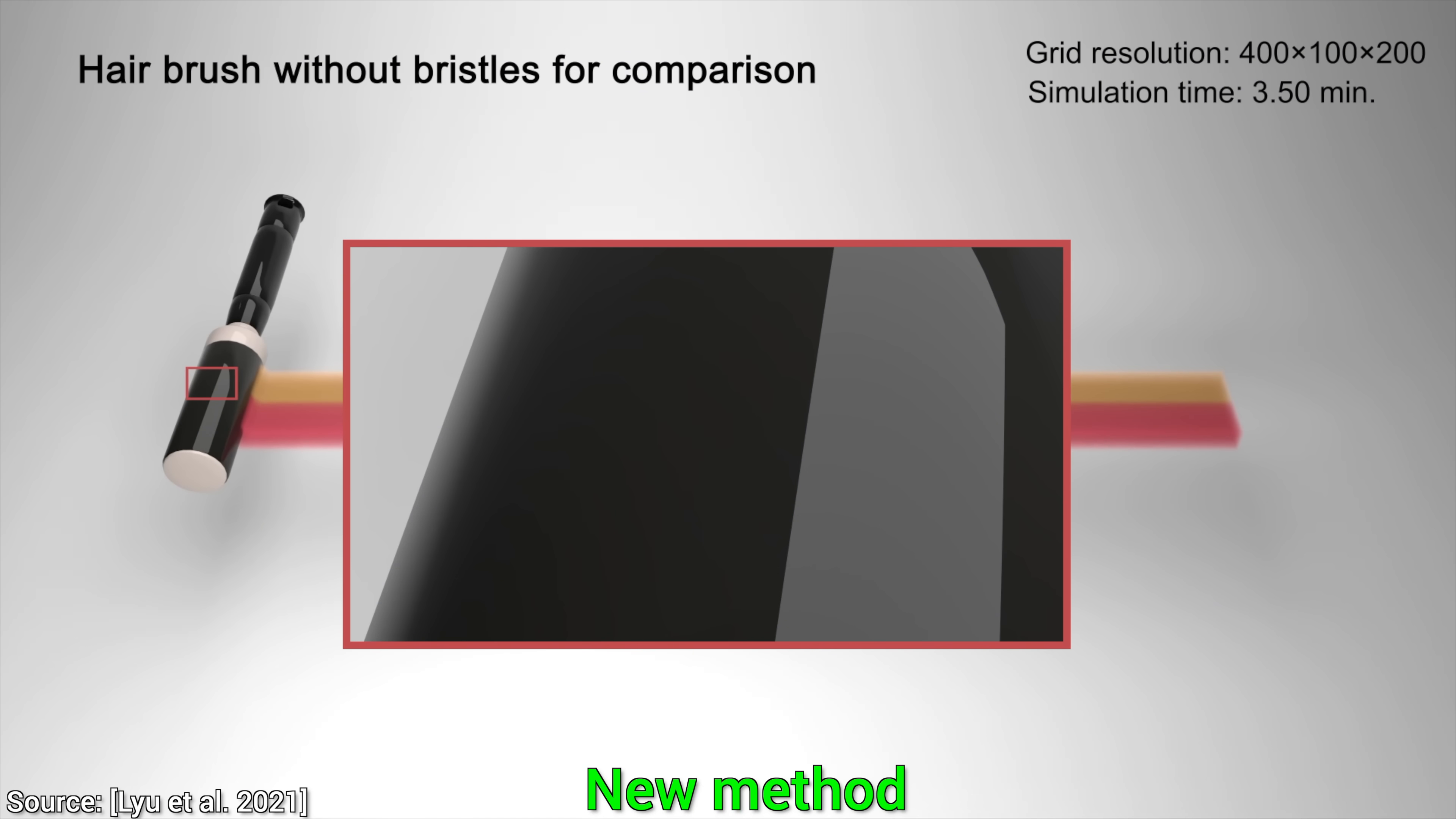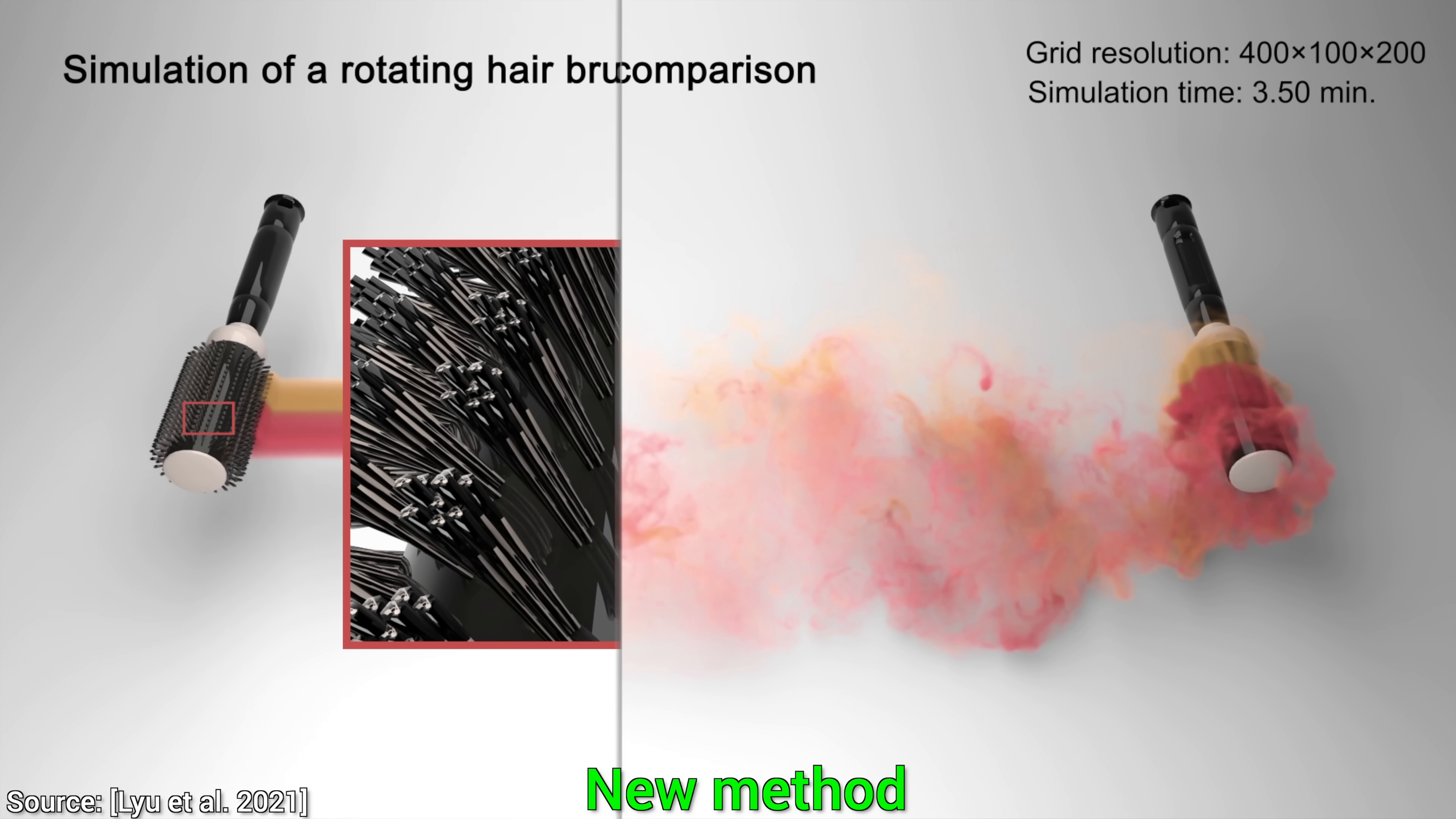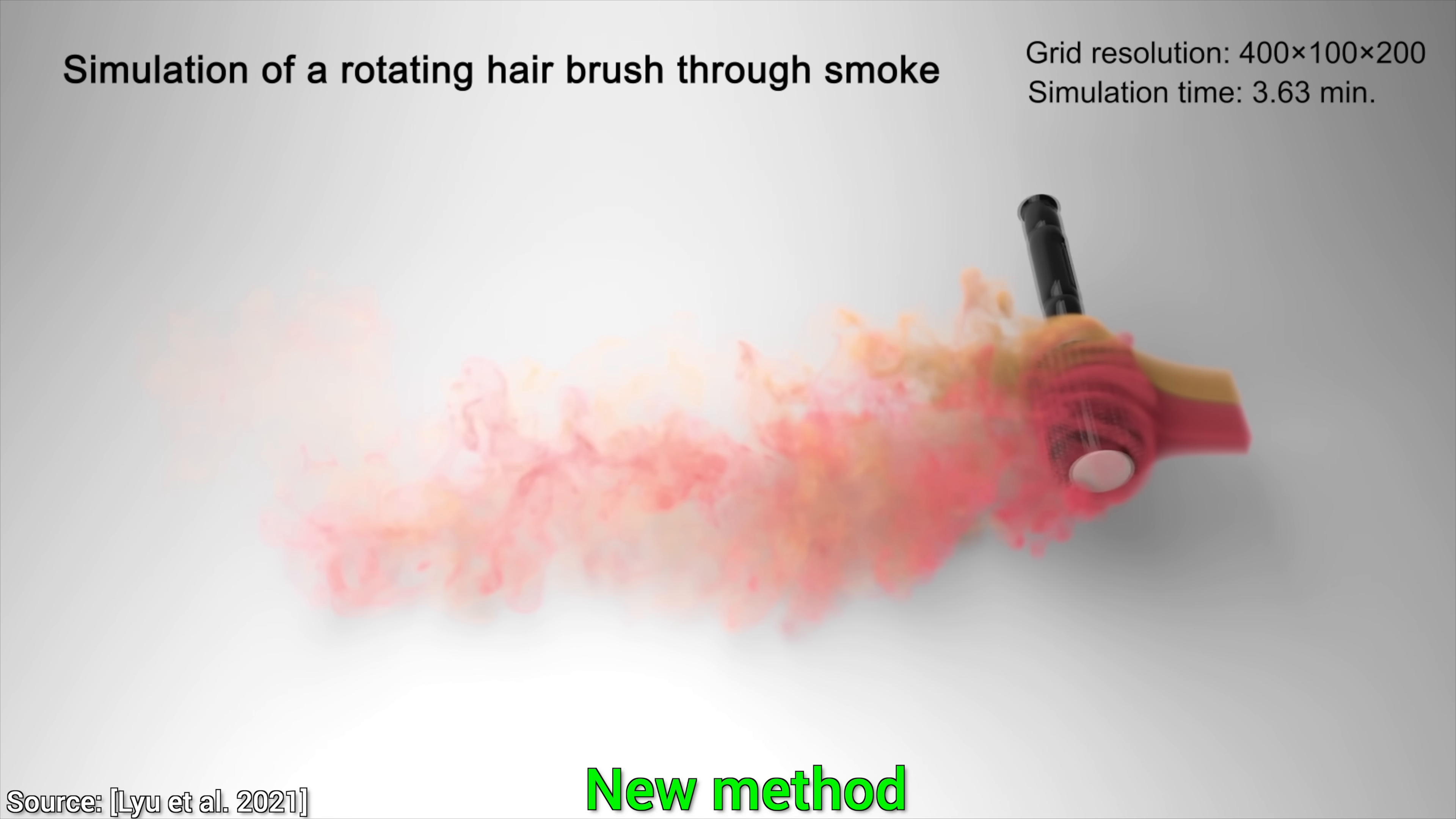We can also take a hairbrush without bristles and have an interesting simulation. Or, even better, add tiny bristles to its geometry and see how much more of a turbulent flow it creates. I already love this paper. So good!